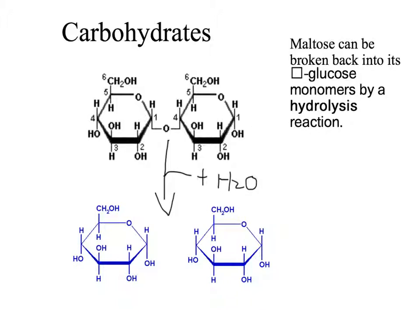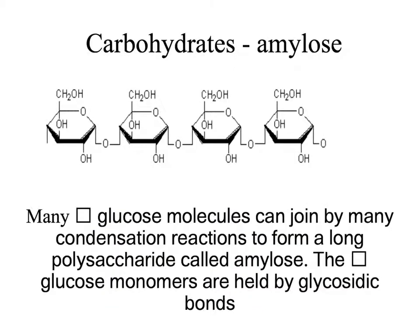Many alpha-glucose molecules can join together in a long chain to form amylose or starch. This involves many condensation reactions and many glycosidic bonds. These are all strong covalent glycosidic bonds formed by condensation reactions.